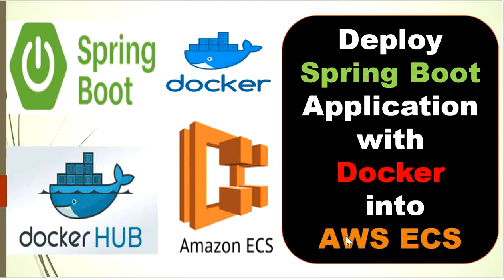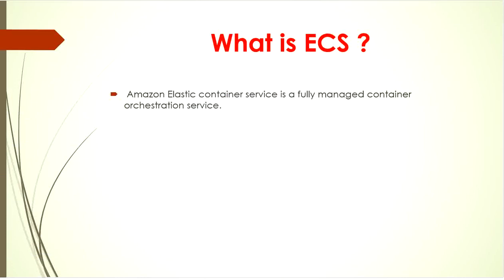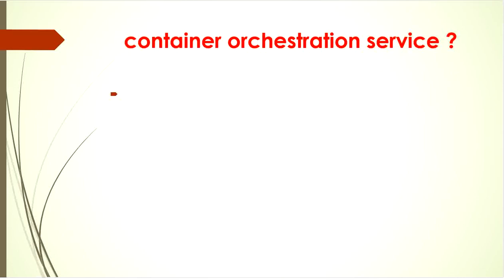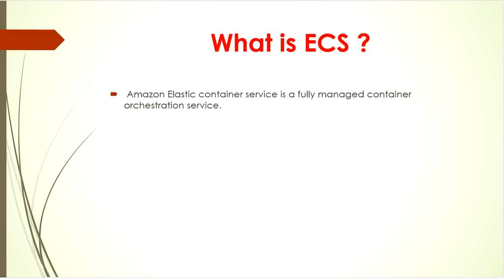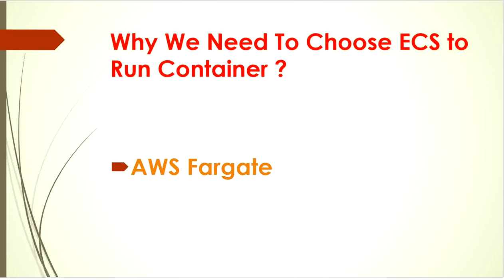Let's start discussing about what is AWS ECS. ECS stands for Elastic Container Service, and Amazon Elastic Container Service is a fully managed container orchestration service. Container orchestration is the automatic process of managing or scheduling the work of individual containers for applications based on microservices within multiple clusters. Most companies are using ECS to run their most sensitive and mission-critical applications because of its security, reliability, and scalability.